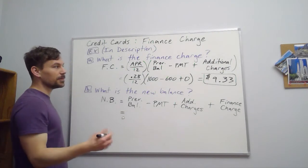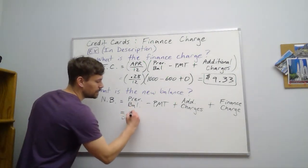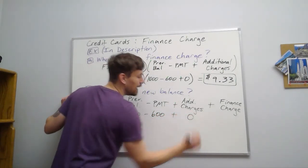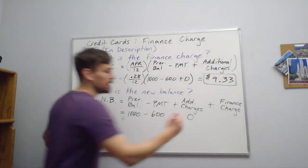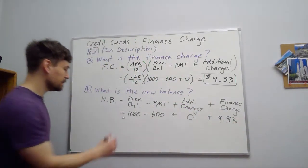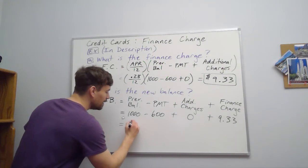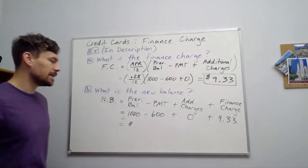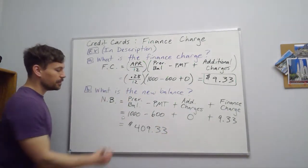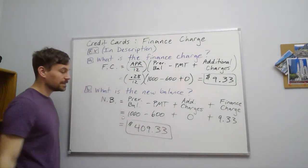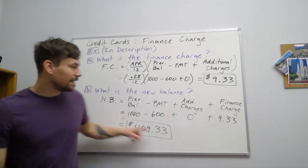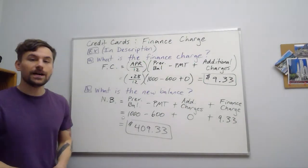So the good news is a lot of these numbers we can just repeat. The previous balance was $1,000. The payment that we made was $600. We did not have any additional charges. And then we had a finance charge of $9.33. So our new balance, going into the next month, is $409.33. $400 of that came from balance that was carried over, and the extra $9.33 was our finance charge.